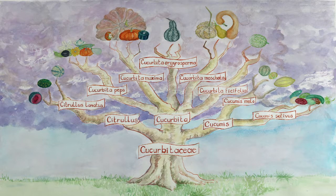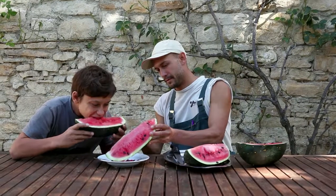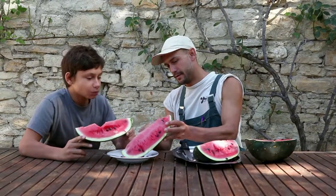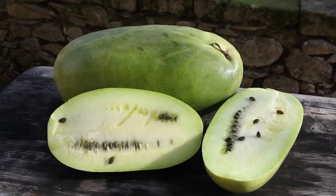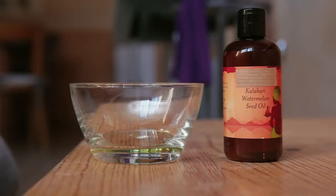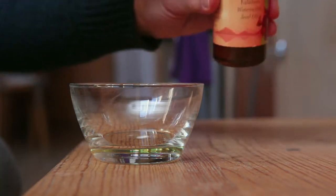The watermelon is an annual plant of the Cucurbitaceae family that belongs to the Citrullus lanatus species. There are three main types of watermelon: those with sweet flesh, those used for jam, and those cultivated in Africa for their seeds, which are rich in oil and whose flesh is bitter.